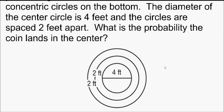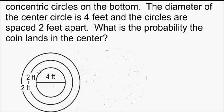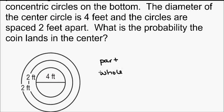So this is a probability involving area. And we're still going to do part over whole. And we have circles, so we need to know the area of a circle. Remember the area of a circle is pi r squared. And the radius of the center, this is the diameter, so the radius is 2. So my area of that small one is pi times 2 squared, or 4 pi.